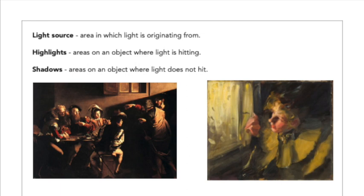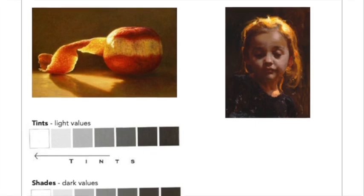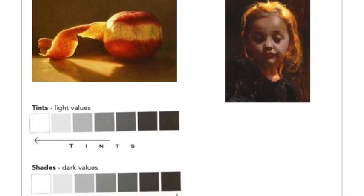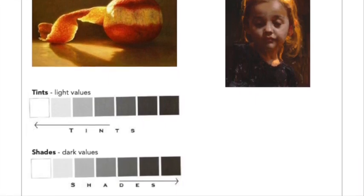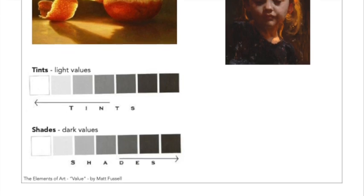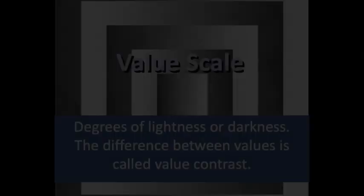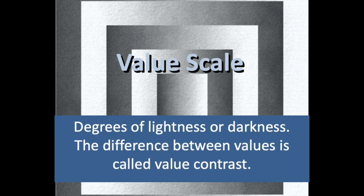The whole point of value is to create the illusion of light. So value is used to basically create the illusion of highlights and shadows. Highlights and shadows combine to create the illusion of a light source. Remember, without light we cannot see, so technically without a light source you have no illusion. The difference between values is called value contrast.